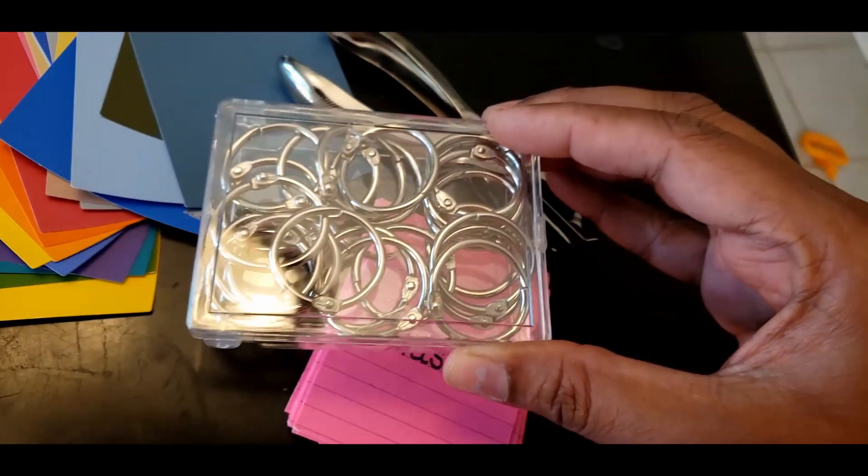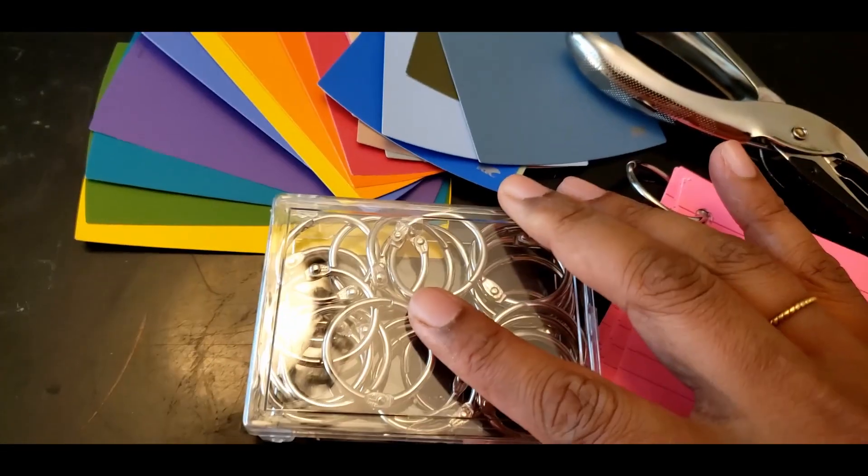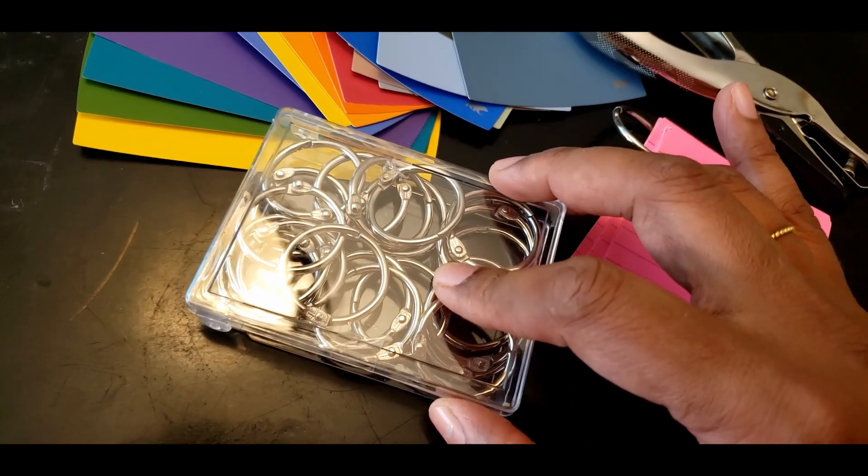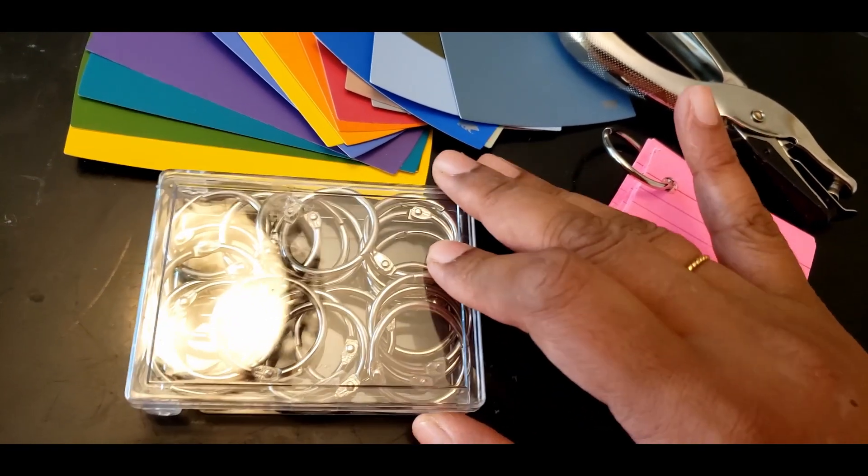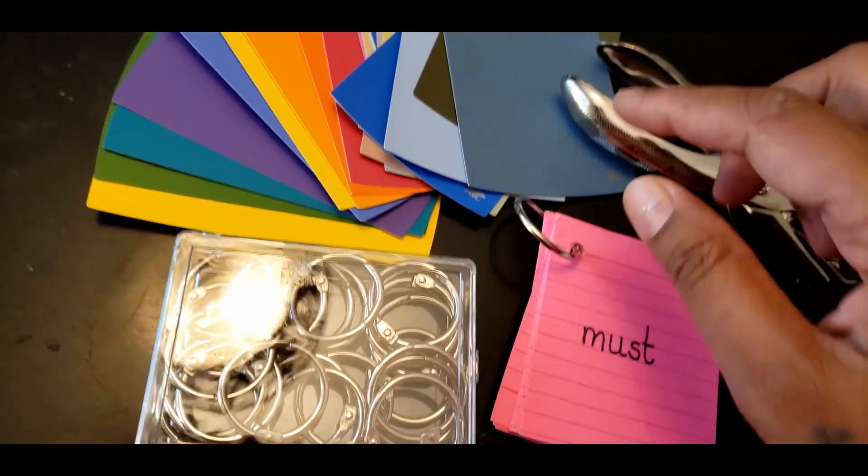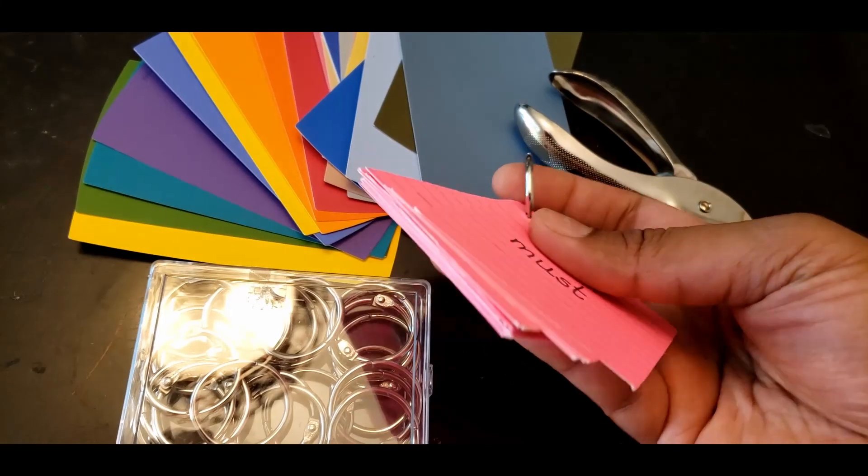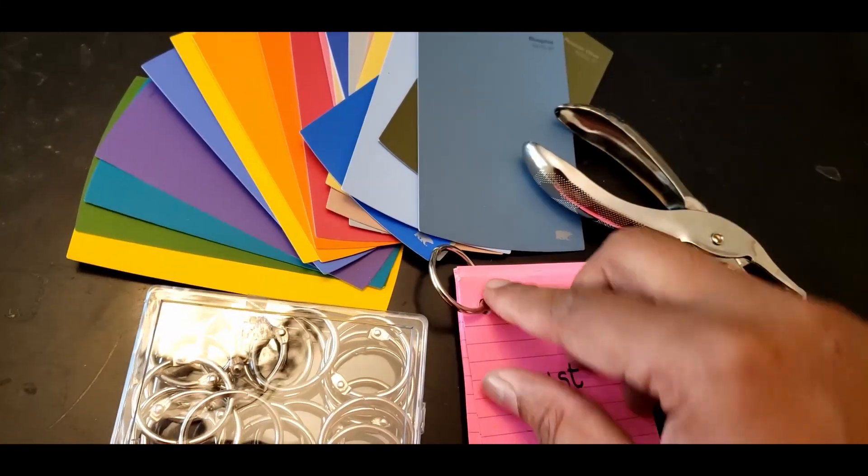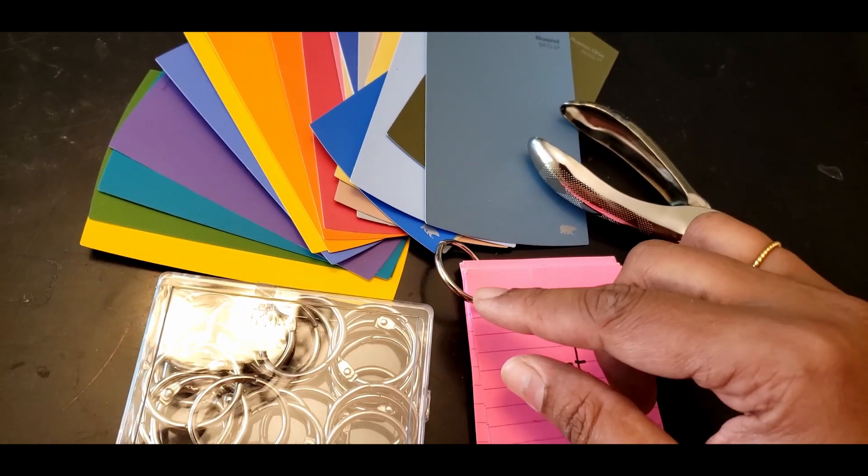I used a one-hole punch and a leaf ring, also called flashcard rings, which are easily available on Amazon. I'll put a link in the description. Just make sure when you're punching the holes, all your papers are lined up together in the right spot so all your holes are aligned and even.